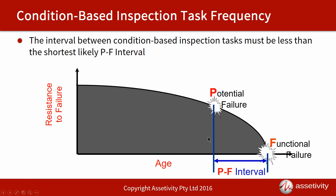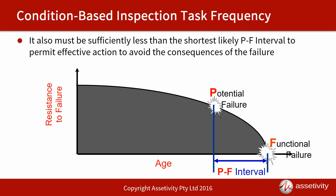I must do the inspection at a frequency that's less than the PF Interval — but it's not enough to simply be less than the PF Interval. It needs to be sufficiently less than the PF Interval to allow me to avoid the consequences of the failure. If I did it at exactly the PF Interval, I might detect the condition just before it reaches the alarm level, then return just before the bearing seizes — and that wouldn't give me enough time to avoid the failure consequences.